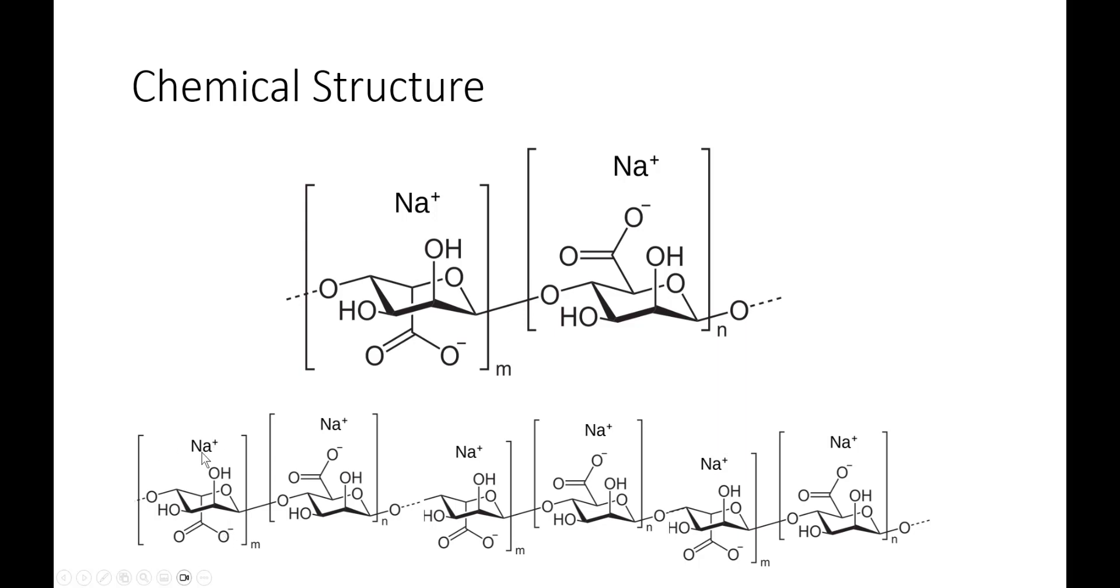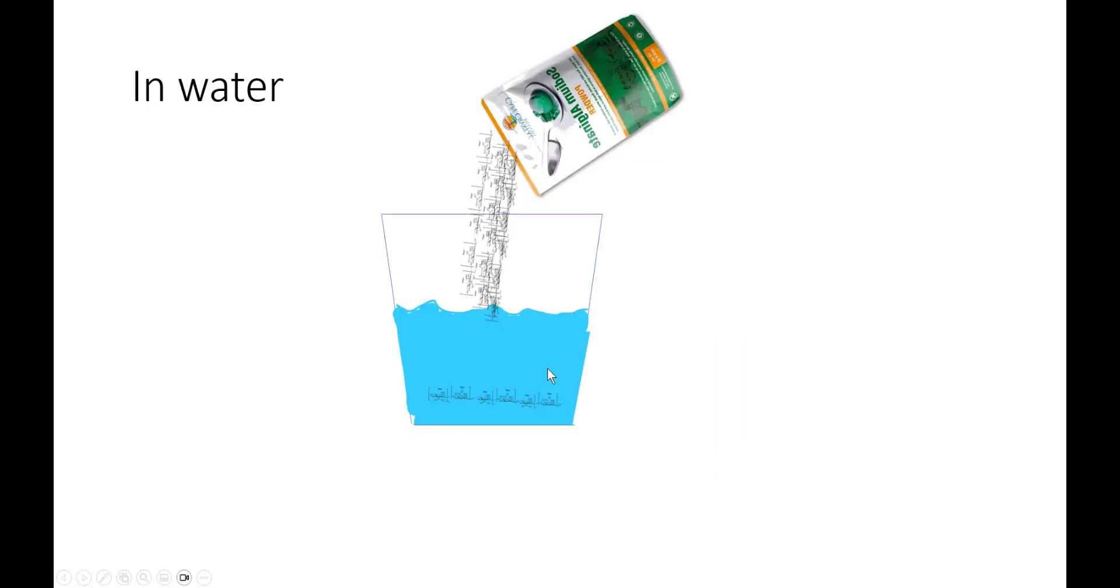Thus, any sodium nearby is going to act as a stabilizing unit because it's actually lost one electron, and thus, opposite poles attract, right? So, what actually happens when we try to dissolve this stuff in water?